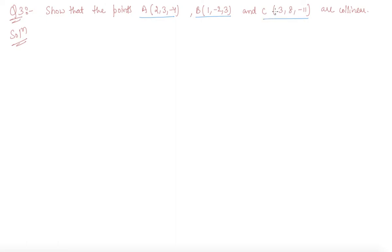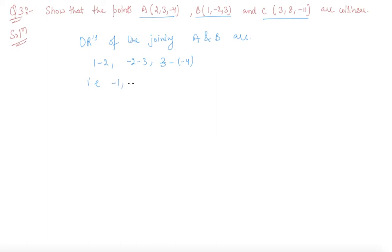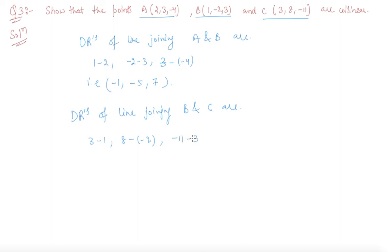To show this, we need to show that the direction ratios of the line joining A and B are: 1 − 2, −2 − 3, 3 − (−4), which gives −1, −5, 7. Similarly, the direction ratios of the line joining B and C are: 3 − 1, 8 − (−2), −11 − 3, which gives 2, 10, −14.